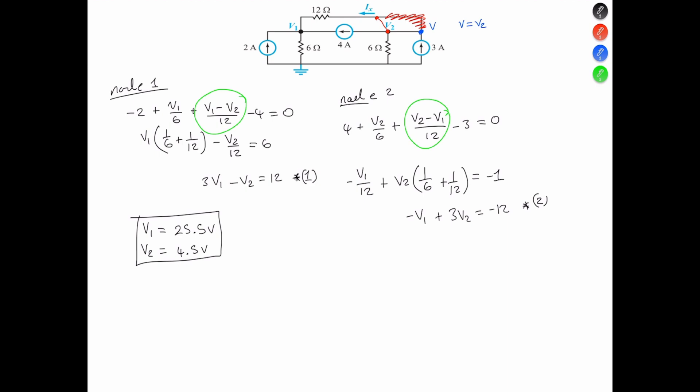Thus Ix is equal to V2 minus V1 all over 12 ohms. And that is going to equal negative 21 divided by 12 is equal to negative 1.75 amperes.